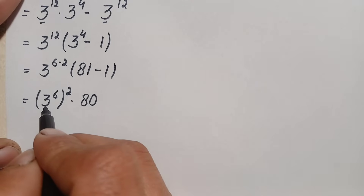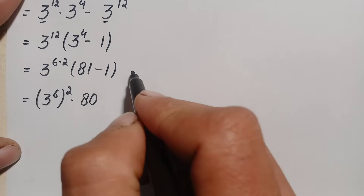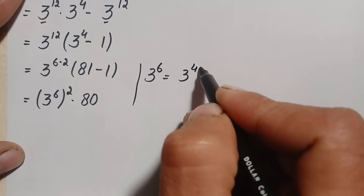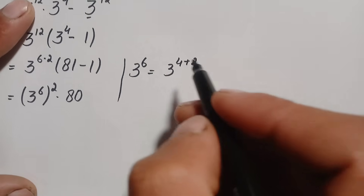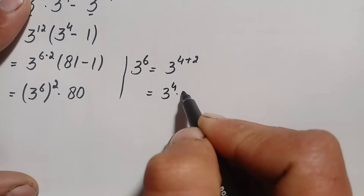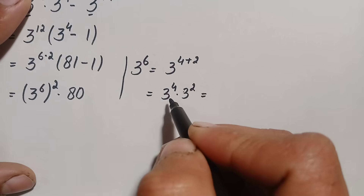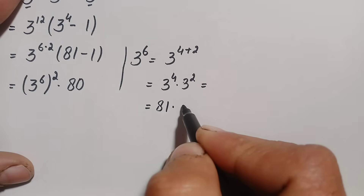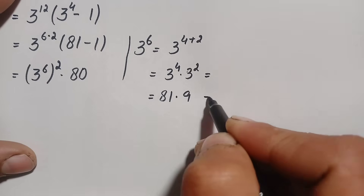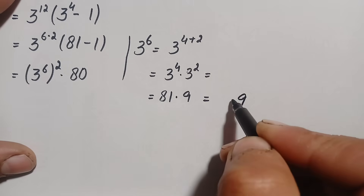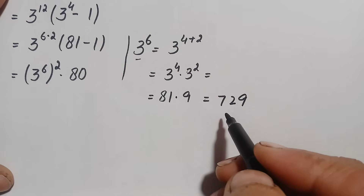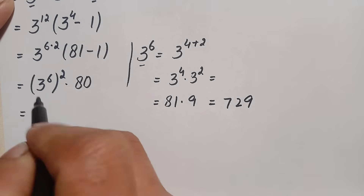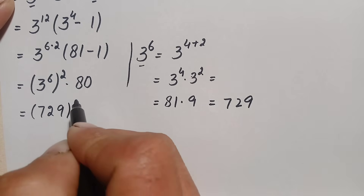Now we need to find the value of 3 to the power 6. We write 3 to the power 6 as 3 to the power (4 plus 2), which equals 3 to the power 4 times 3 to the power 2. The value of 3 to the power 4 is 81 and 3 to the power 2 is 9. So 81 times 9: 9 times 9 is 81, carry 8; 9 times 8 is 72, giving 729. So 3 to the power 6 is 729.